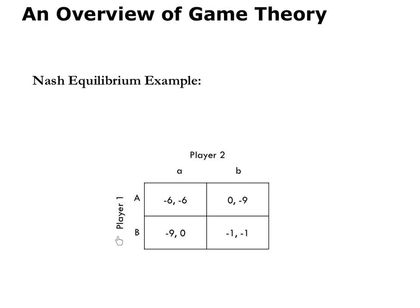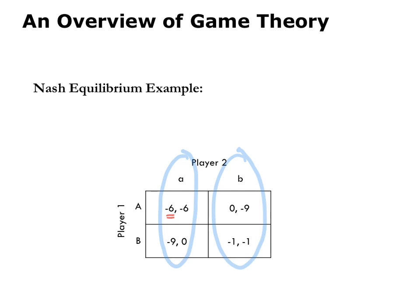This payoff matrix has two players, player one and player two, each of whom can make two moves, move A and move B. If player one thinks that player two will choose move A, then player one should choose move A as well because A has the higher payoff. If player one chooses A, her payoff will be minus six, which is more than the minus nine she'll get from choosing move B. If player one thinks player two is instead choosing B, then player one should choose A. That's because by choosing A, she'll get a payoff of zero, which is higher than the minus one she'll get by choosing B. So we see that player one has a dominant strategy: regardless of what player two does, player one should choose move A.